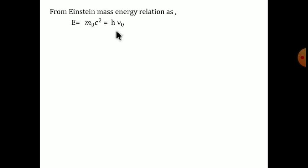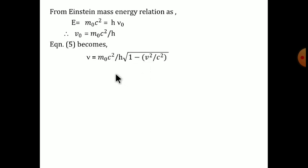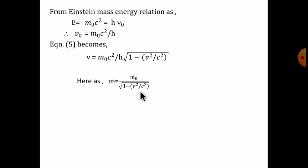From Einstein's energy relation, we separate nu-zero as equal to m-zero c-squared divided by h. Substituting this, the frequency nu becomes m-zero c-squared divided by h times the square root of one minus v-squared over c-squared. Using the relativistic mass-velocity relation from special relativity — m equals m-zero divided by the square root of one minus v-squared over c-squared — we substitute m-zero over that factor directly for m, so the frequency simplifies to m c-squared divided by h.